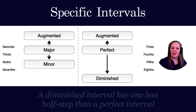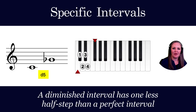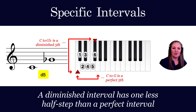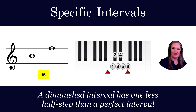A diminished interval has one less half step than a perfect interval. So since C to G is a perfect fifth — seven half steps — C to G-flat would be a diminished fifth with six half steps. B to F is also a diminished fifth, since B to F-sharp is a perfect fifth.